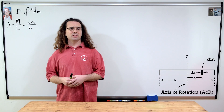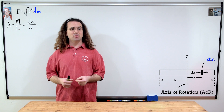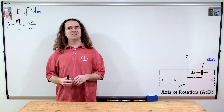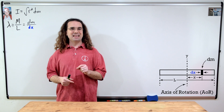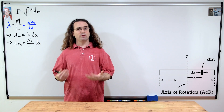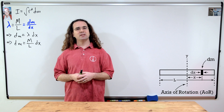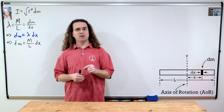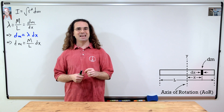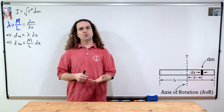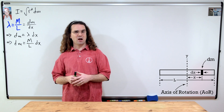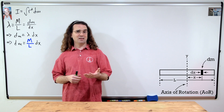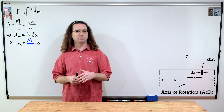The goal here is to substitute in for dm with an expression which includes dx, because r in this case is in the x-direction. If we multiply both sides by dx, we have dm equals linear mass density times dx, and the linear mass density equals the total mass divided by the length of the rod, so we can substitute that in for lambda.